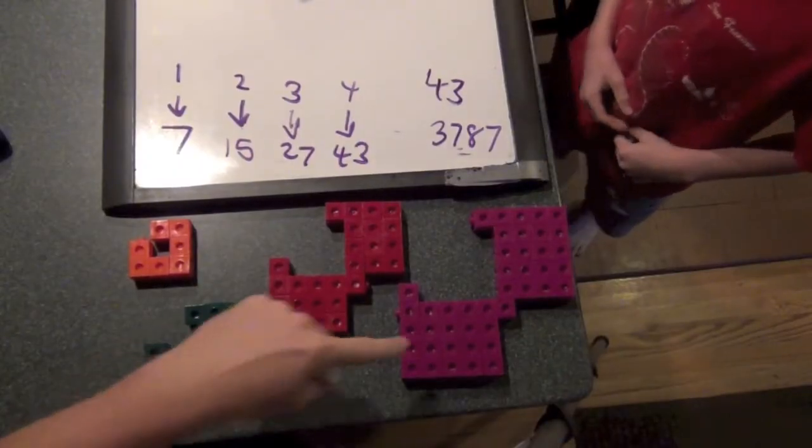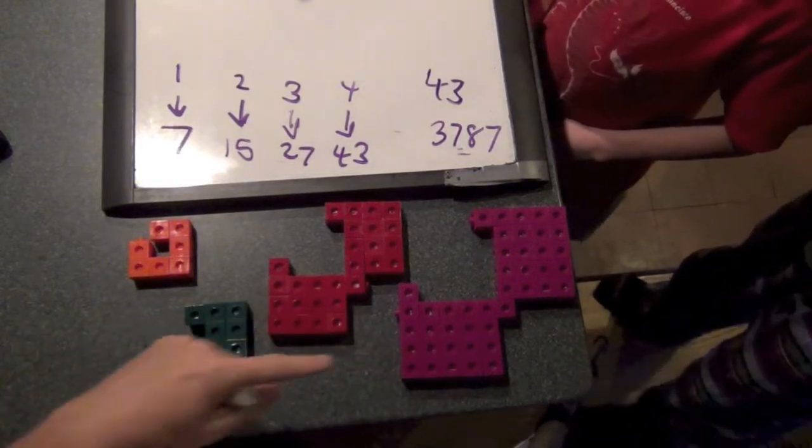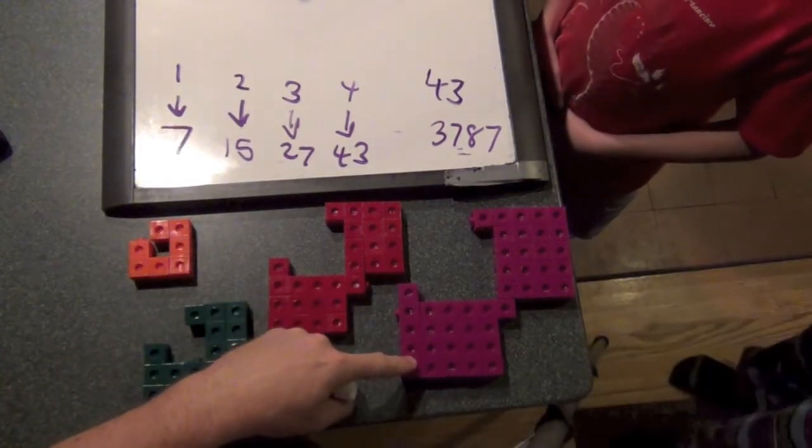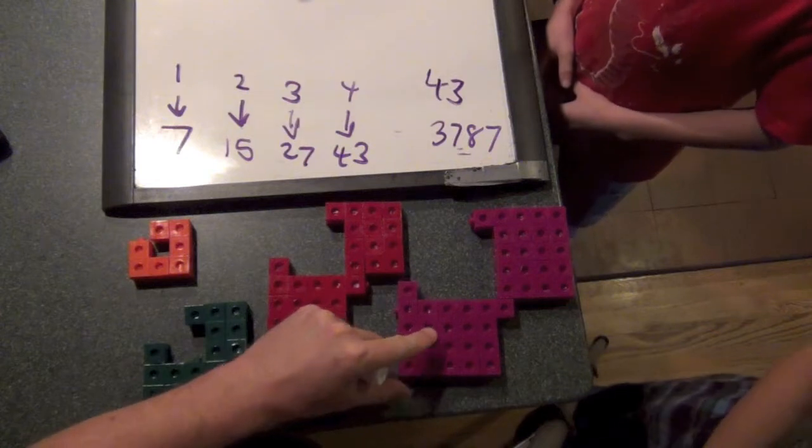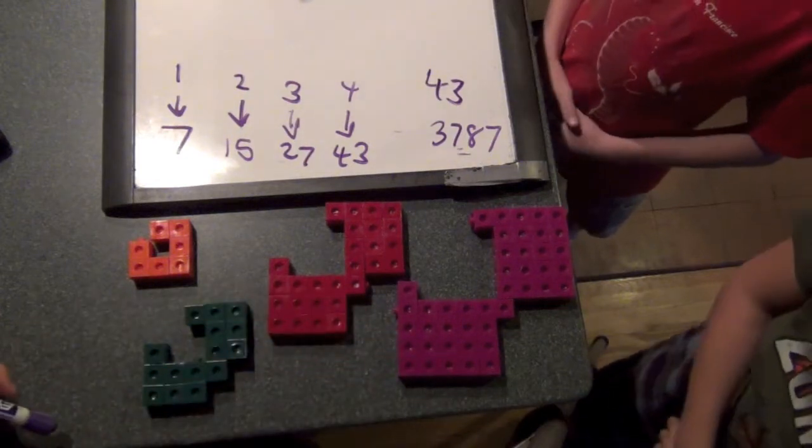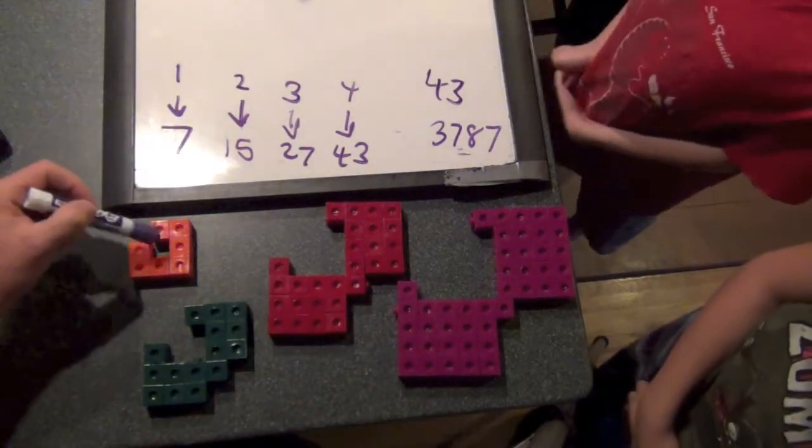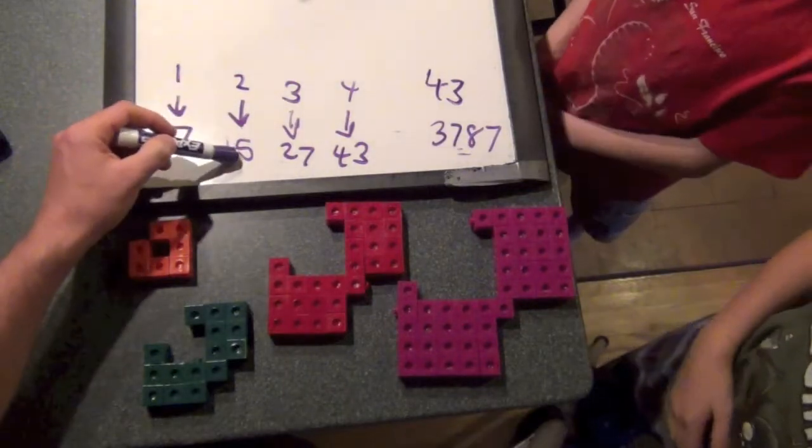Okay. So here we're back and we built the fourth step in the sequence. And how many blocks did it have? It had forty-three blocks. So we have a very interesting pattern. The first one had seven.